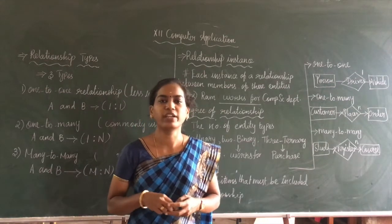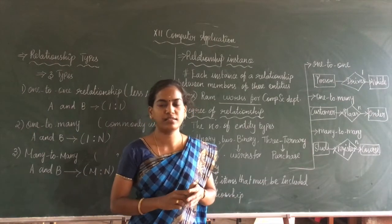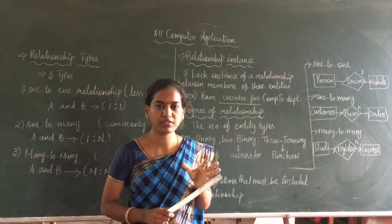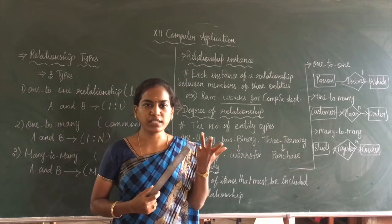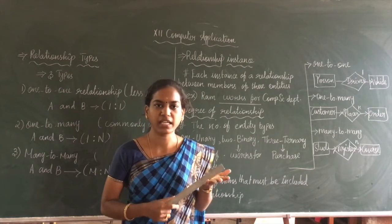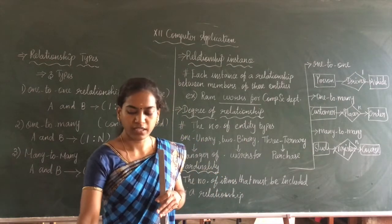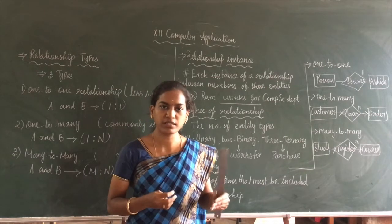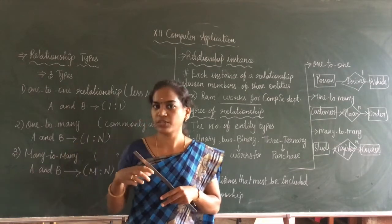Hello everyone. Today we are going to learn about the third basic model of ER diagrams, which is relationship types. We have already seen the previous two types: the basic concepts include entity types and attributes. So we have three types of basic concepts: entity types, attributes, and relationship types. We have already finished learning entity types — strong, weak, and entity instance. Last class we covered the five types of attributes. Today we move to the third topic, relationship types.